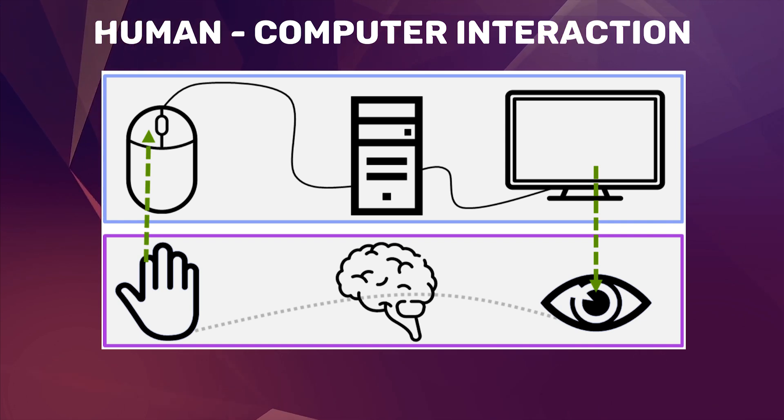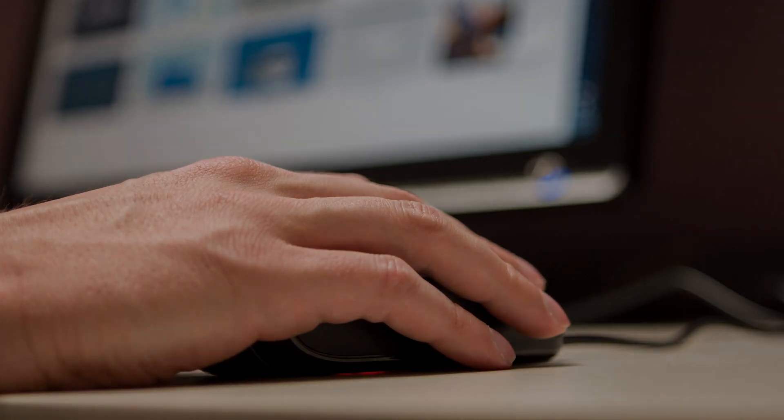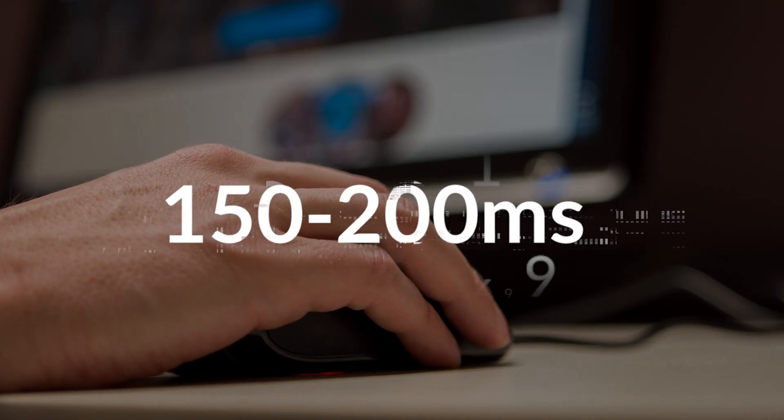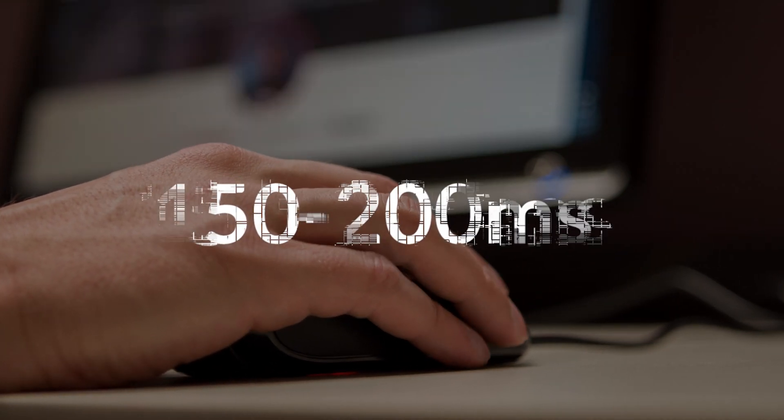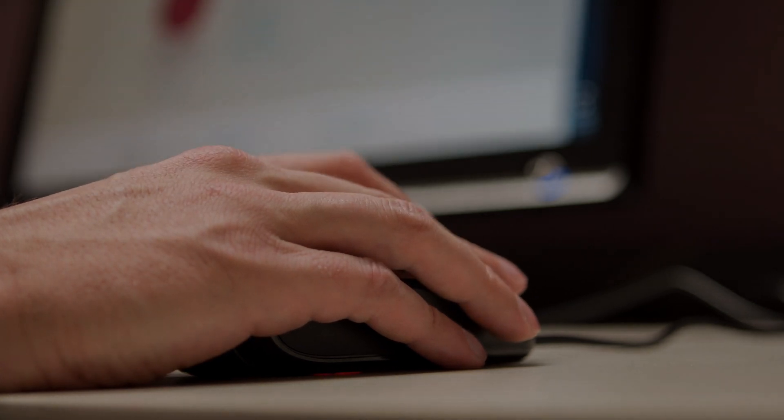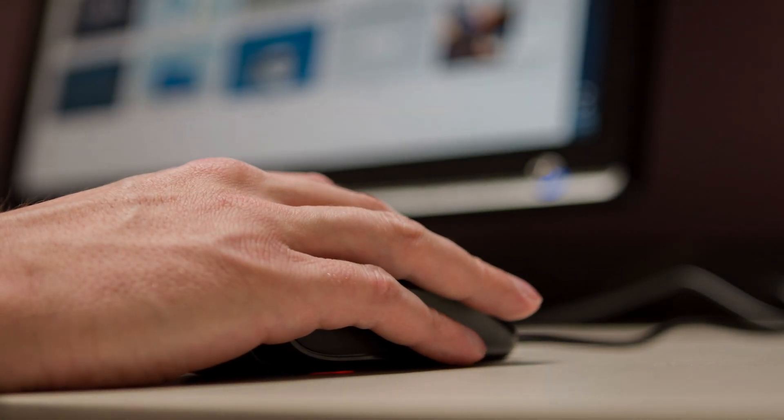Thinking about it, this is a lot of steps for a simple task as clicking a mouse. Hand movement often accompanies a 150 to 200 millisecond delay, which is the time it takes for the signal to travel through the human-computer interaction model.